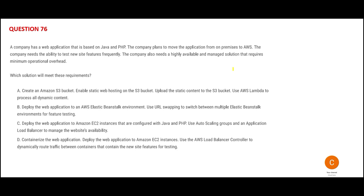The trend nowadays is moving from on-premises to cloud, and the question is also telling you to do the same — move from on-premises to AWS. The application is written using Java and PHP. Once you go to cloud, you want things to be highly available. The client is also saying: give me my application which is highly available and with minimum operational overhead. AWS promised these things, so the client wants to see if that's delivered.